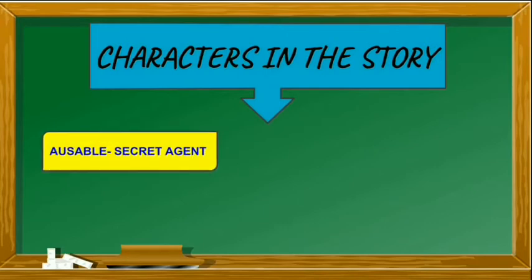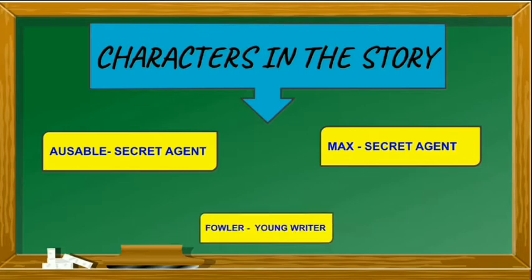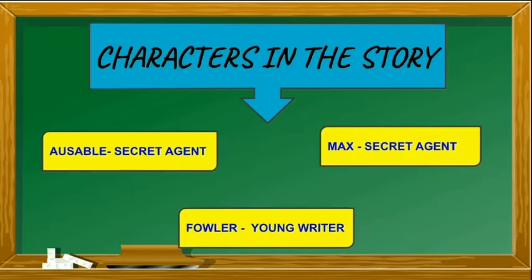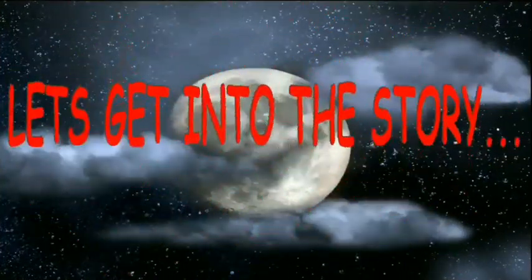The first character is Ozobal, a secret agent. The second character is Max, another secret agent — or you can say a rival agent of Ozobal. The third character in the story is Fowler, who is a young writer. Now let's get into the story.